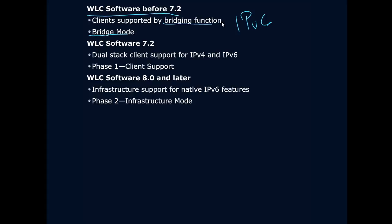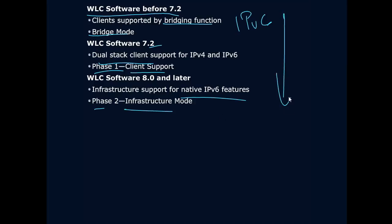In software 7.2, we were able to add dual stack client support for both IPv4 and IPv6, running them at the same time, with actual client support for IPv6. Then in wireless LAN controller software 8 and later, we've done the full Monty — native IPv6 features, all those IPv6 features brought in, and even phase 2 infrastructure modes. The progression has been a complete adaptation of IPv6 into the software. I'm not the only one saying IPv6 is coming — everybody is preparing for this.